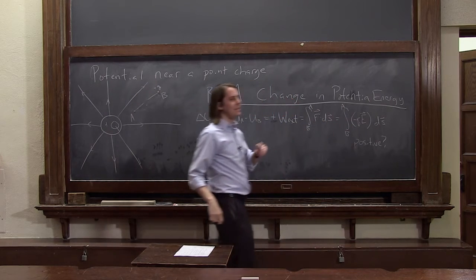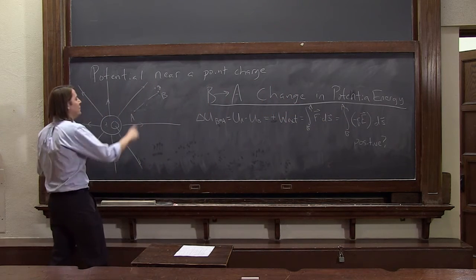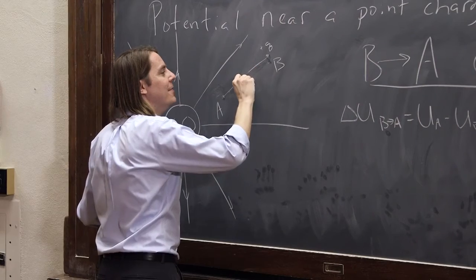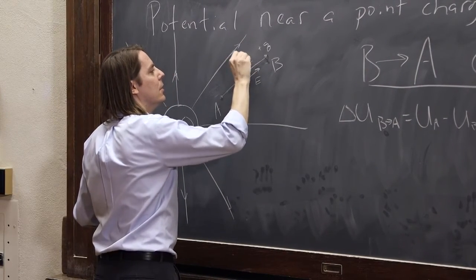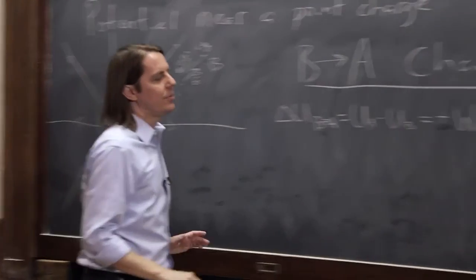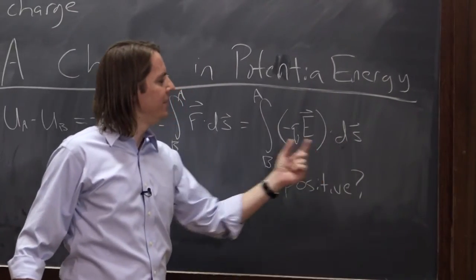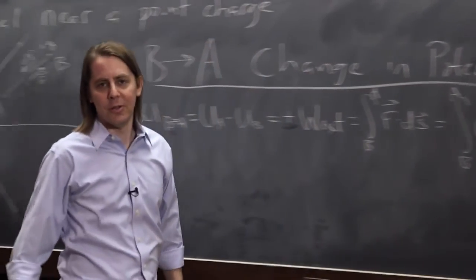But, guess what? E and dS are in a different direction now. So, if you actually were to calculate the integral, you have E going this way and you have dS going that way. So, since they're opposite direction, this dot product will come out negative. It will cancel that negative and it will come out positive.